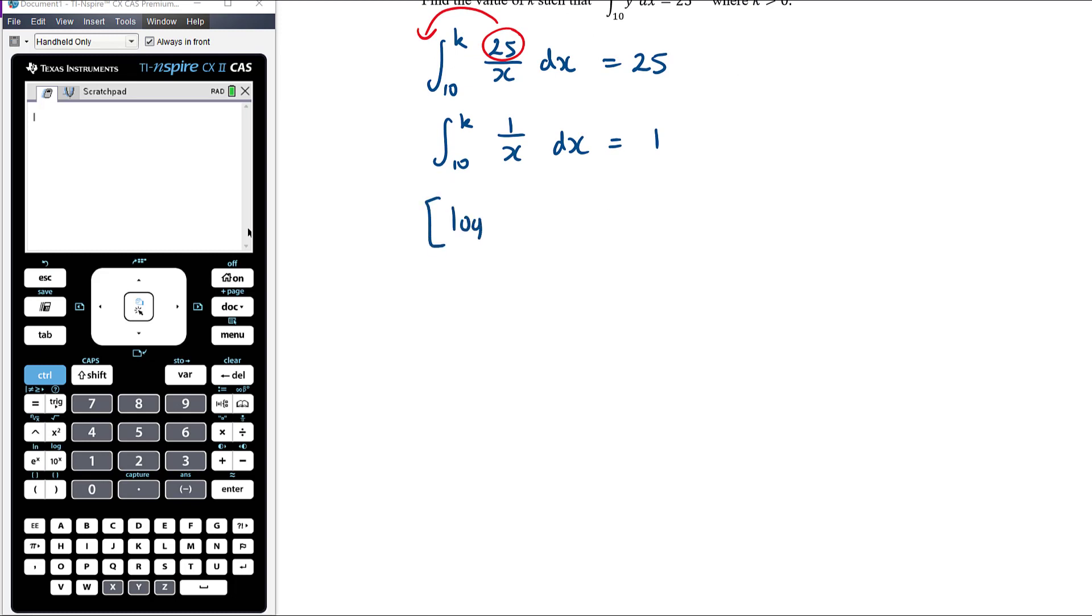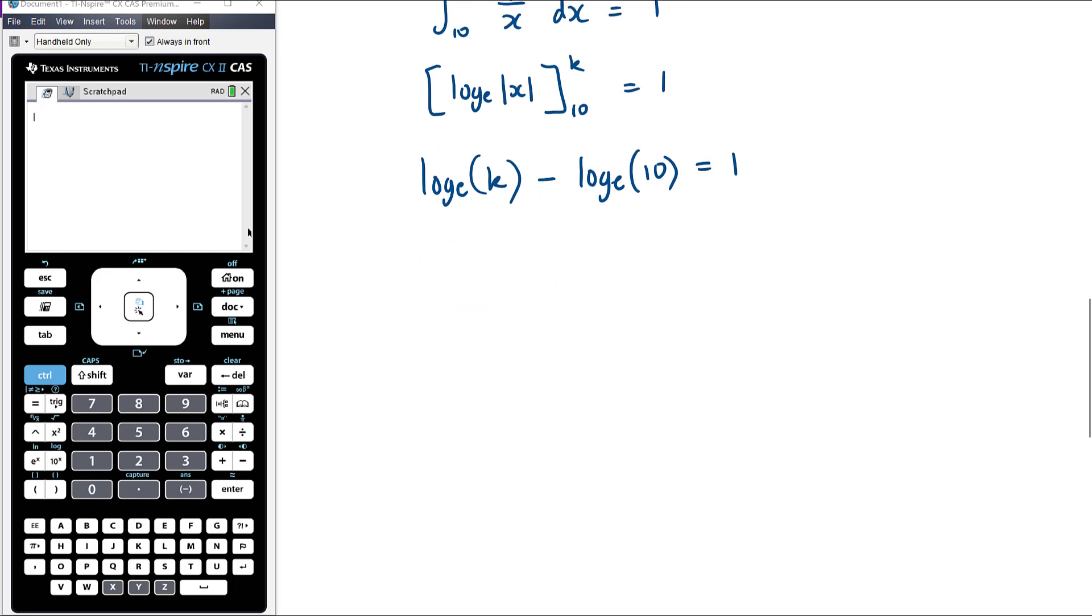The antiderivative of 1 on x is log e of x from 10 to k, which has to equal 1. We've got log e of absolute value of k minus log e of absolute value of 10, which is just 10, equals 1. The other thing we notice is that k has to be positive, so the absolute value of that positive number is still just going to be the number, so we can ignore the absolute value signs.